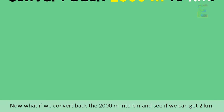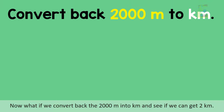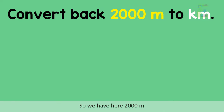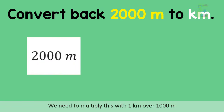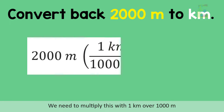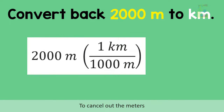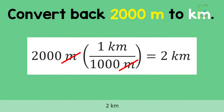Now what if we convert back the 2,000 meters into kilometers and see if we can get 2 kilometers. We have here 2,000 meters. We need to multiply this with 1 kilometer over 1,000 meters to cancel out the meter. And this gives us the final answer of 2 kilometers.